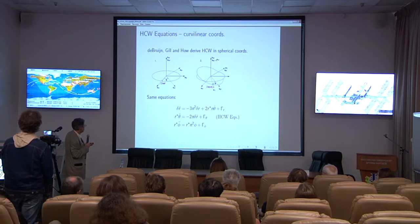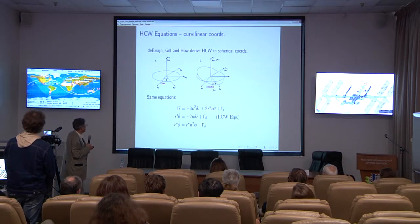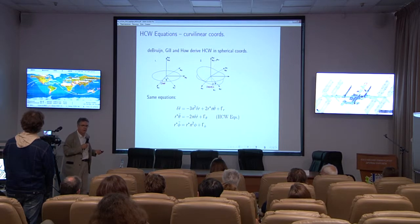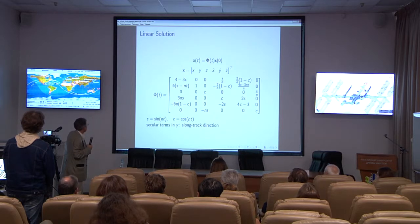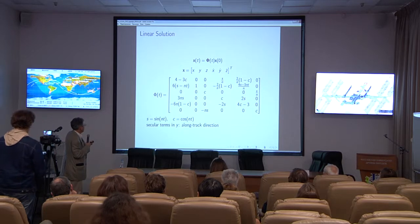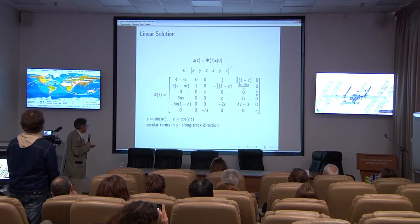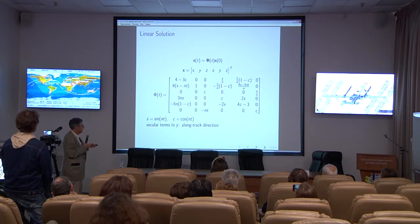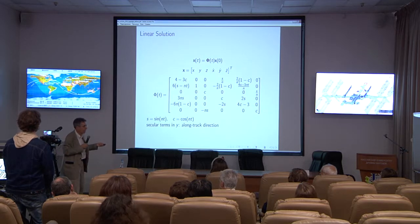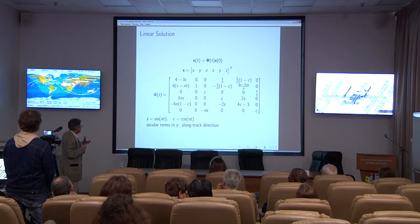In spherical coordinates, we get the HCW equations now in spherical coordinates. The linearized solution looks like this. An important thing to note is that in the second row, involving the position and velocity in the Y direction — in either rectilinear or cylindrical coordinates — there is a secular term here and a secular term here.